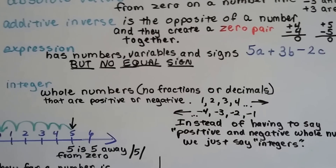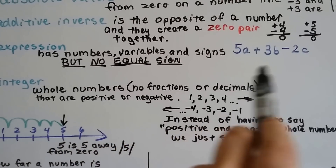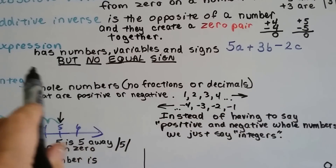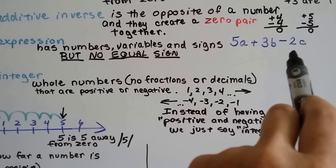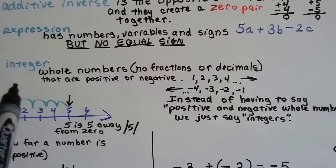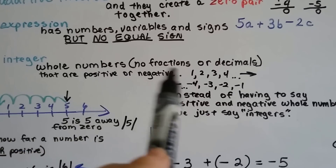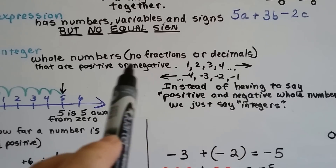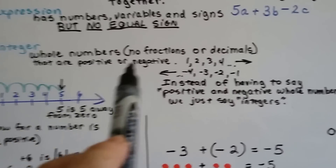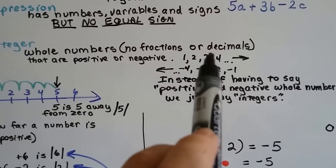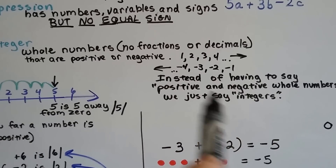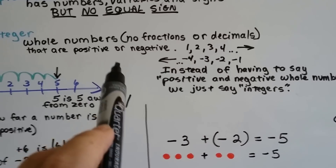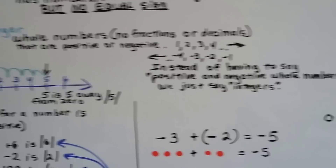An expression has numbers, variables, and operation signs, but there is no equal sign — that's an algebraic expression. An integer is any whole number; no fractions or decimals allowed. Integers are positive or negative: like one, two, three, four, and so on, or negative one, negative two, negative three, negative four, and so on. Those are integers.